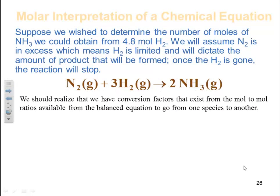We should realize that we have conversion factors that exist from mole-to-mole ratios available from a balanced equation that we can get from one species to the other. So there's many different factors in a balanced equation. For example, I know for one mole of nitrogen, I can produce two moles of ammonia. This is a one-to-two ratio from the balanced equation.